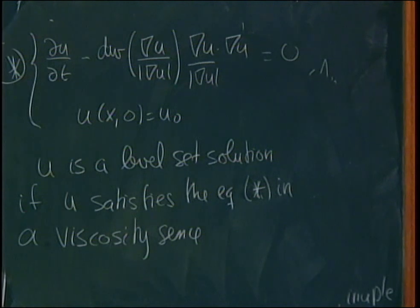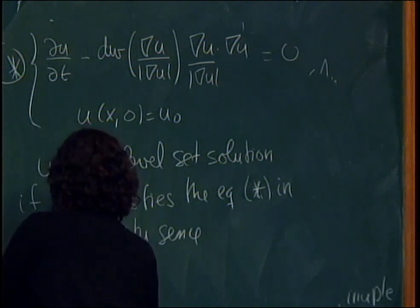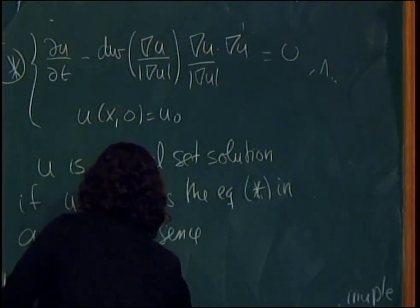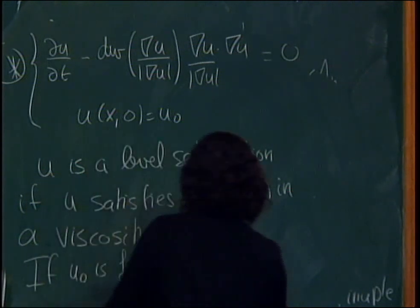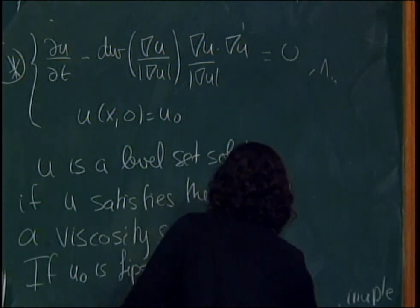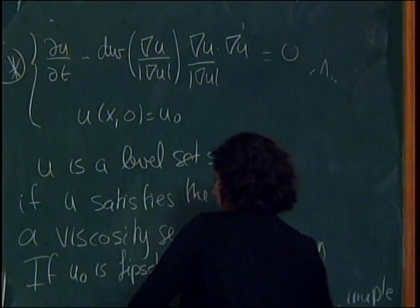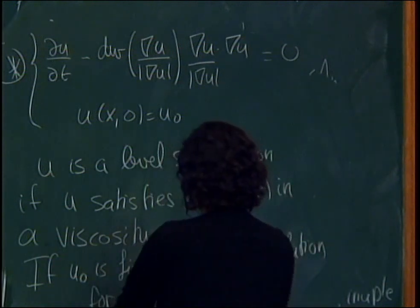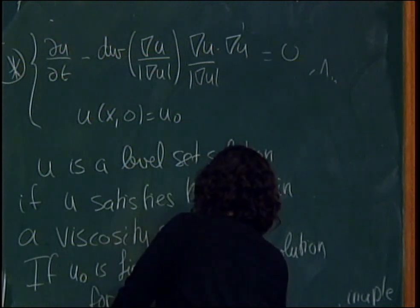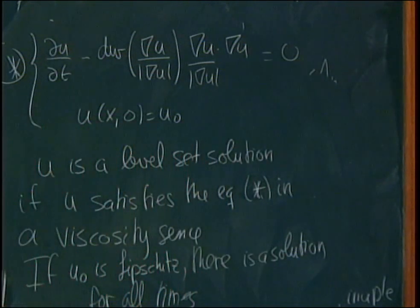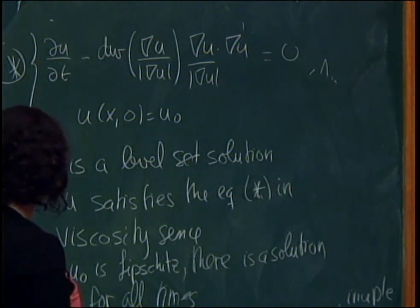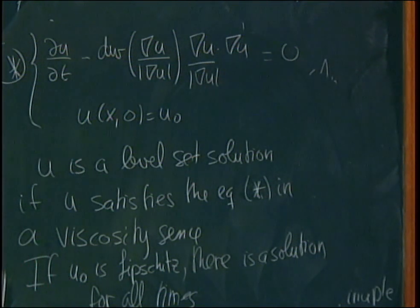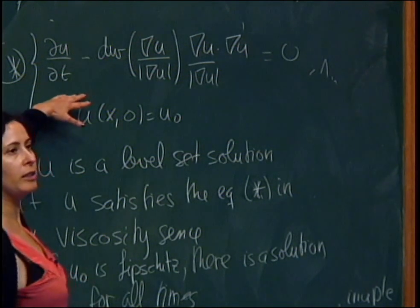We say u is a level set solution, or that M is defined by a level set solution, if u satisfies this equation in a viscosity sense, which is very weak. That means I need a function that is continuous and in some sense satisfies this — but it's only continuous, so it's quite weak. For this, it's not so hard to prove that if you start with an initial condition that is Lipschitz, then you always have a solution for all times.